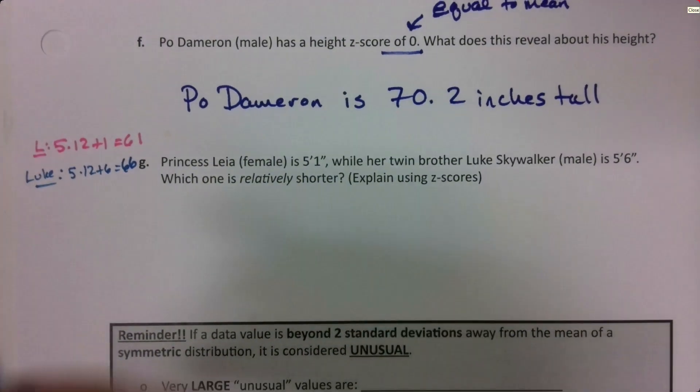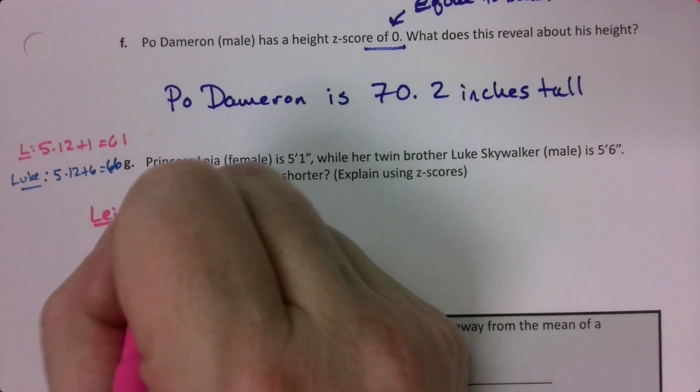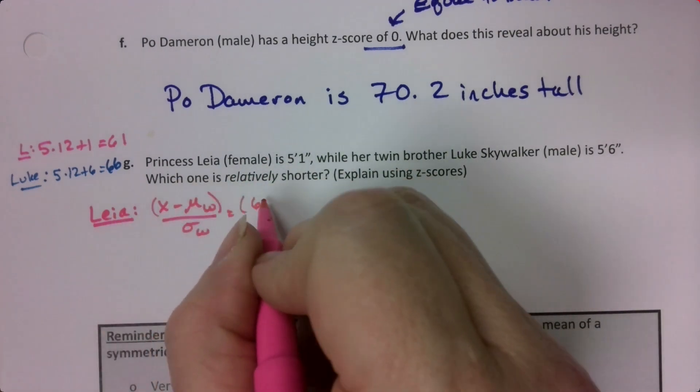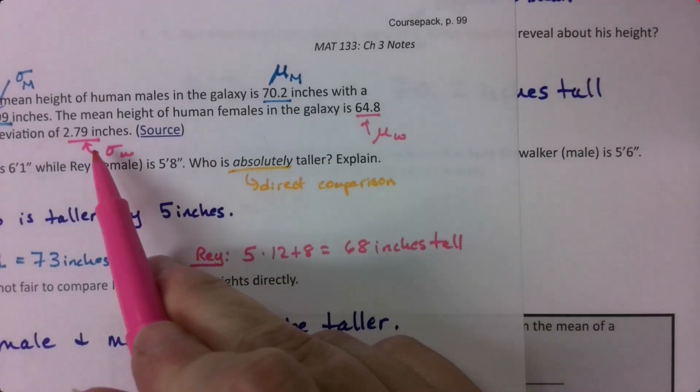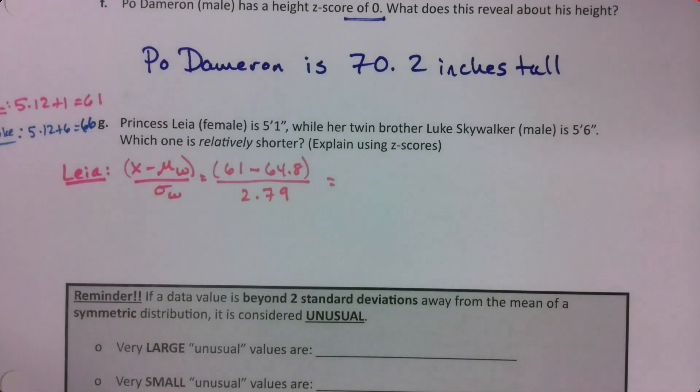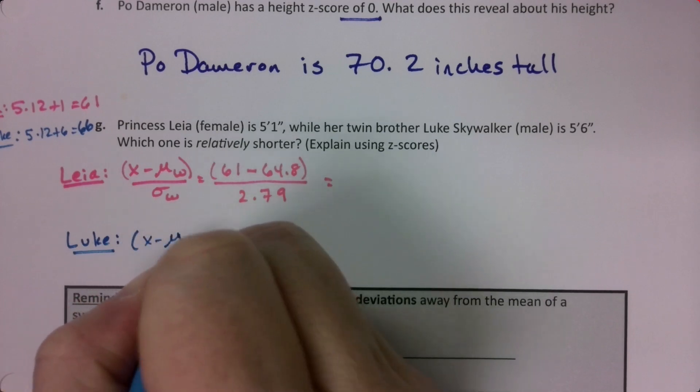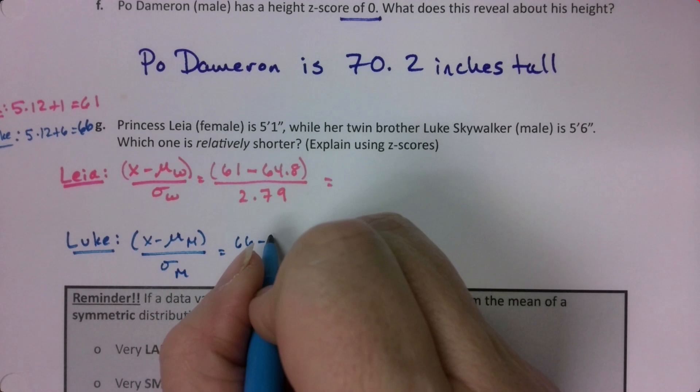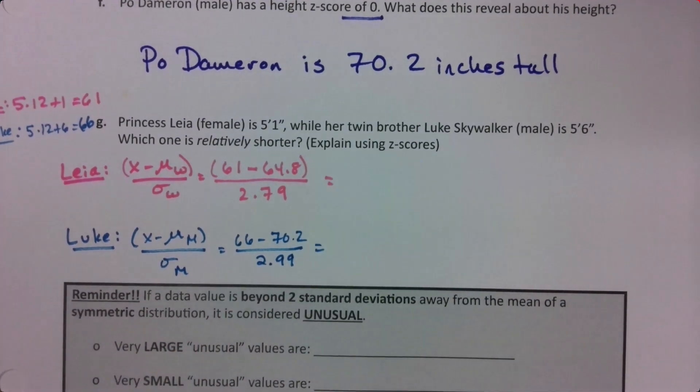Let's start with Leia. For Leia, we want X minus the mean for women over the standard deviation for women. So that's 61 takeaway 64.8, and the standard deviation was 2.79. For Luke, it's X minus the mean for men over the standard deviation for men, which is 66 takeaway 70.2 over 2.99.